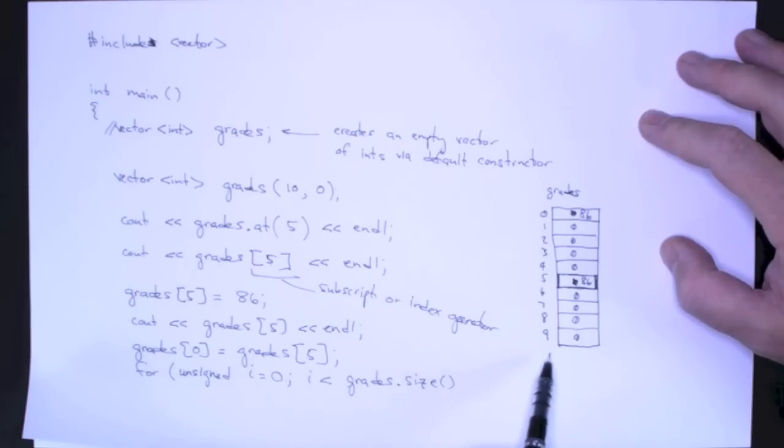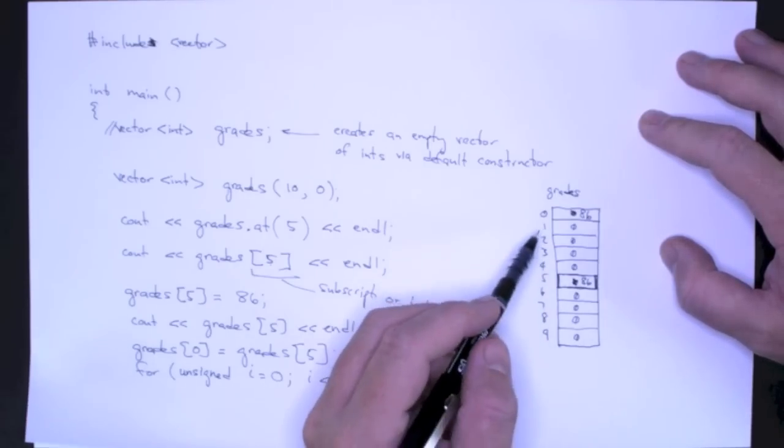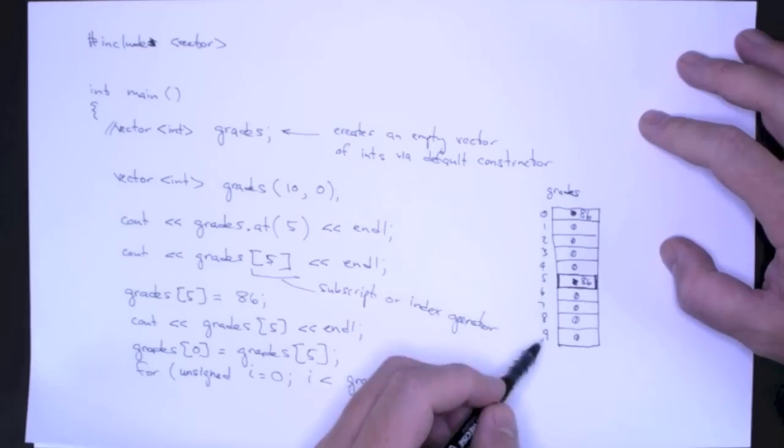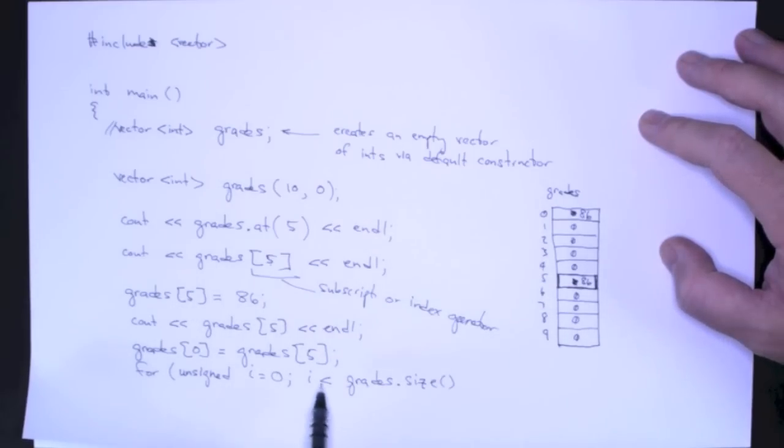Now it's important that this is less than and not less than or equal to. Size is going to return 10, but the only valid positions are from 0 to 9, or 0 to size minus 1. So if you wanted to use less than or equal to, then you would have to subtract 1 from this quantity. But typically we write the for loops like this, where you start at 0 and you go up to but not including the value that size returns.